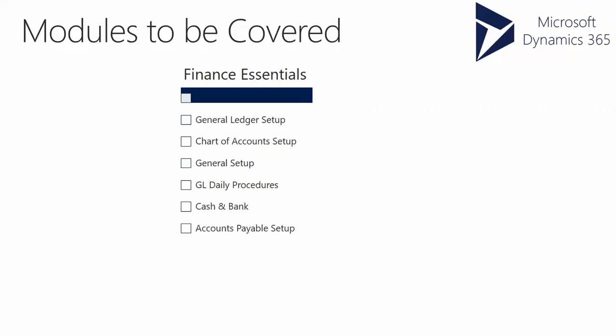Accounts payable setup focuses on payment terms, cash discounts, vendor payments, and vendor groups. Followed by the AP daily procedures — using that setup to create vendors, their invoicing, registering invoices, and invoice register pools.